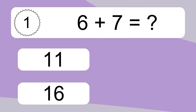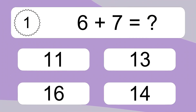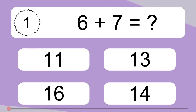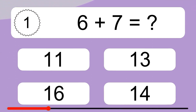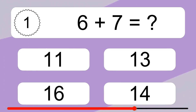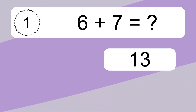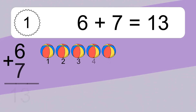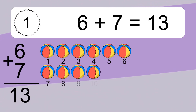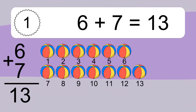6 plus 7 equals what? 6 plus 7 equals 13. Let's count it!